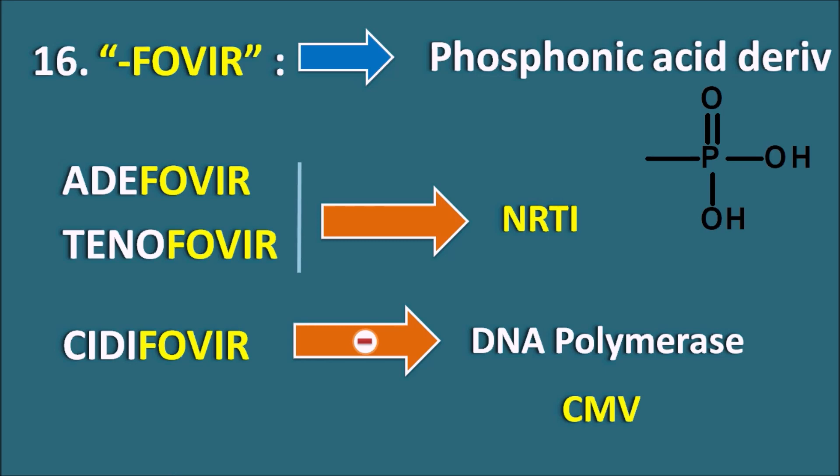In this way, even though these drugs end with the same suffix, their targets are different. Adefovir and Tenofovir act on NRTI, but Cidofovir inhibits the DNA polymerase enzyme.